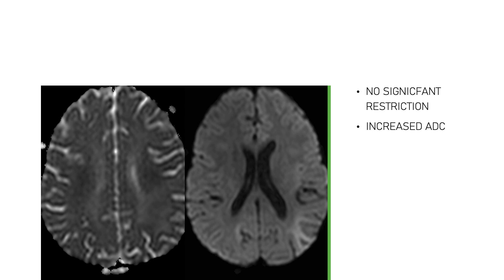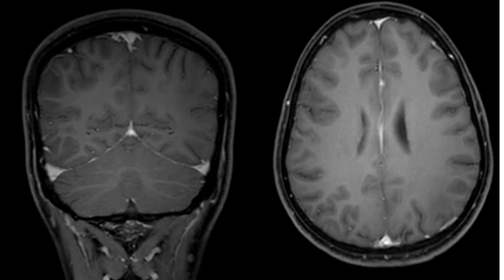The coronal view shows the periventricular area of hyperintensity extending up to the subcortical U-fibers. Diffusion weighted imaging shows some hyperintensity, but the ADC values are not significantly reduced — so there is no true restriction on diffusion weighted images. Post contrast, there is no significant enhancement — no meningeal or parenchymal enhancement at these lesions or in the rest of the brain parenchyma.